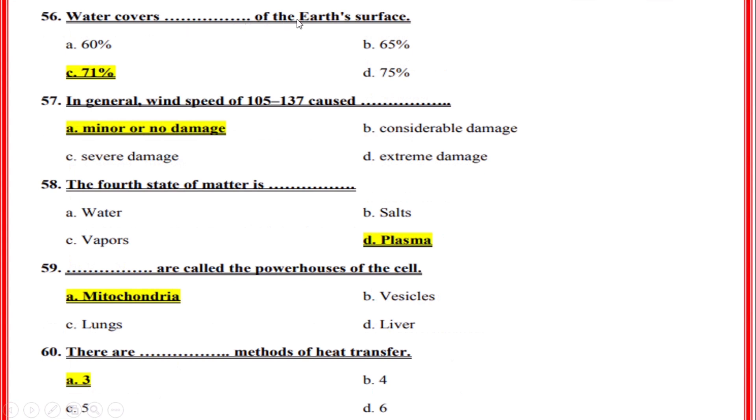Water covers what percentage of the Earth's surface? Correct option: C, 71 percent. In general, wind speed of 105 to 137 causes? Correct option: A, Minor or no damage. The fourth state of matter is? Correct option: D, Plasma. Mitochondria are called the powerhouses of the cells. There are how many methods of heat transfer? Correct option: A, 3 methods.